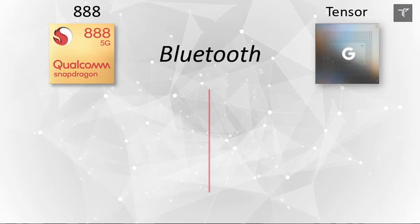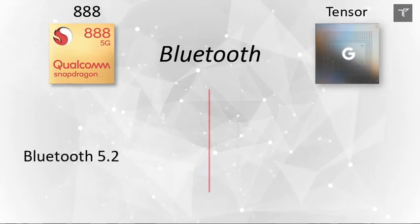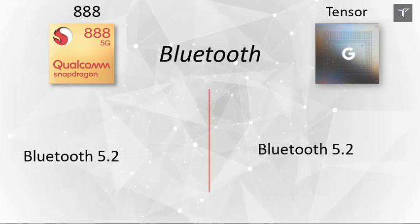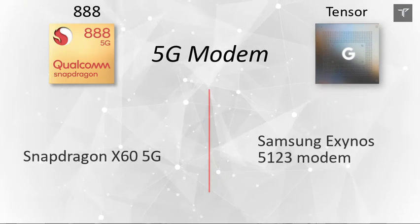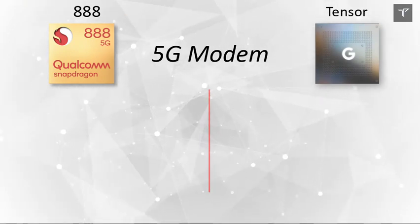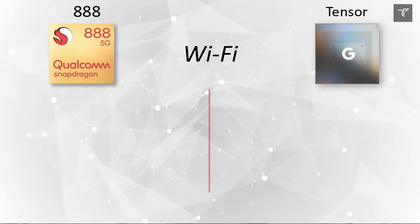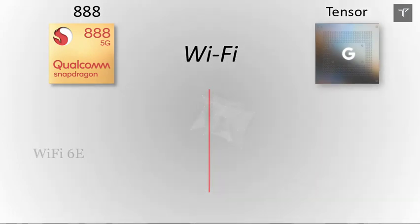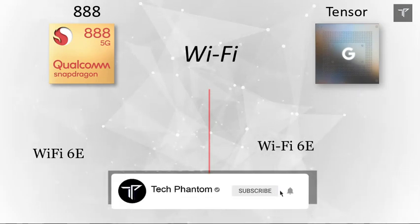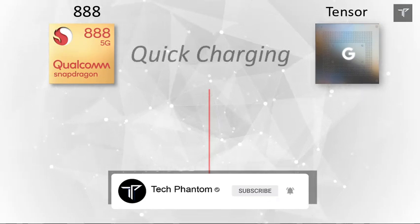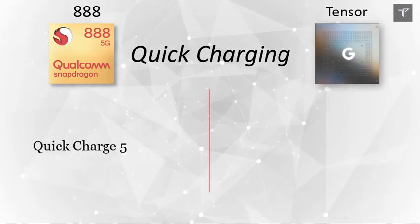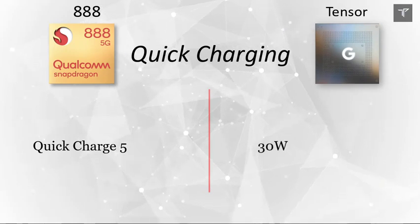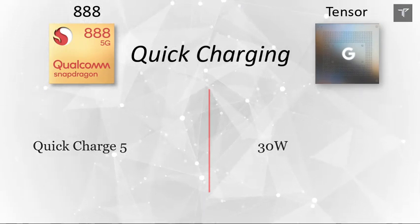On the connectivity side, both processors support Bluetooth 5.2. For 5G modems, the Qualcomm Snapdragon 888 uses the Snapdragon X60 5G modem, whereas the Tensor uses a Samsung 5G modem. Both processors support Wi-Fi 6E, so neither falls behind the other there. For quick charging, the Snapdragon 888 supports Quick Charge 5, whereas the Tensor currently supports up to 13 watts of fast charging on the Pixel 6 series.